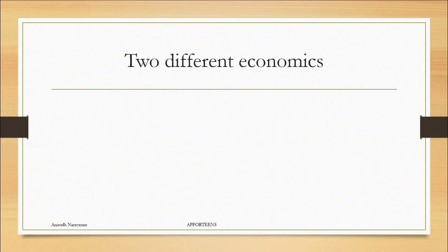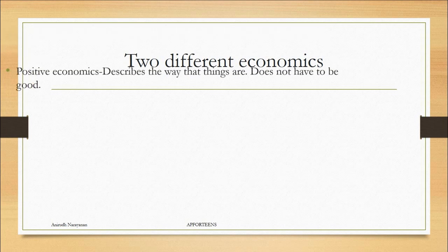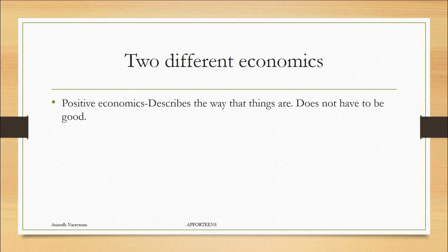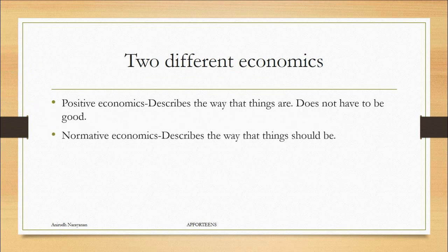Now there are two different types of economics that you're going to see not only in the AP exam but in other types of fields when you learn about economics. There's positive economics which describes the ways that things are. It doesn't have to be good. The positive doesn't necessarily mean it has to be good. It just has to be something factual or true. And then there's normative economics which describes the way that things should be or ought to be.